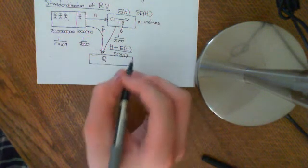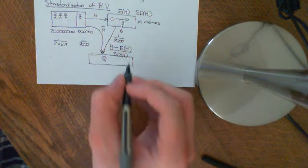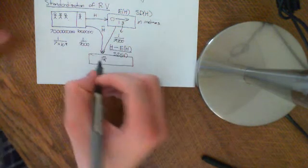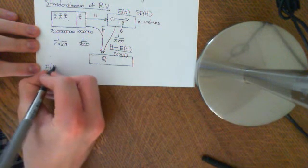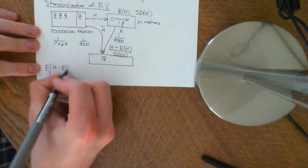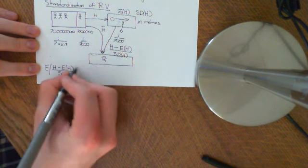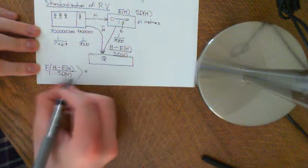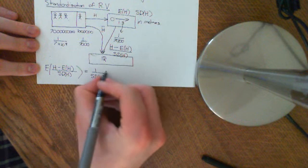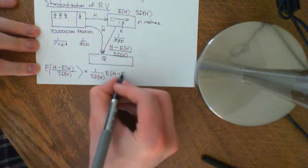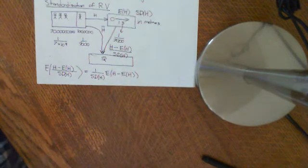What I want to show is that this standardized random variable has expected value equal to zero. Let's prove that. We want to take the expected value of h minus E[h], all divided by the standard deviation of h. By linearity, the standard deviation of h is just a constant, so we pull it out and get 1 over σ(h) times the expected value of (h minus E[h]).